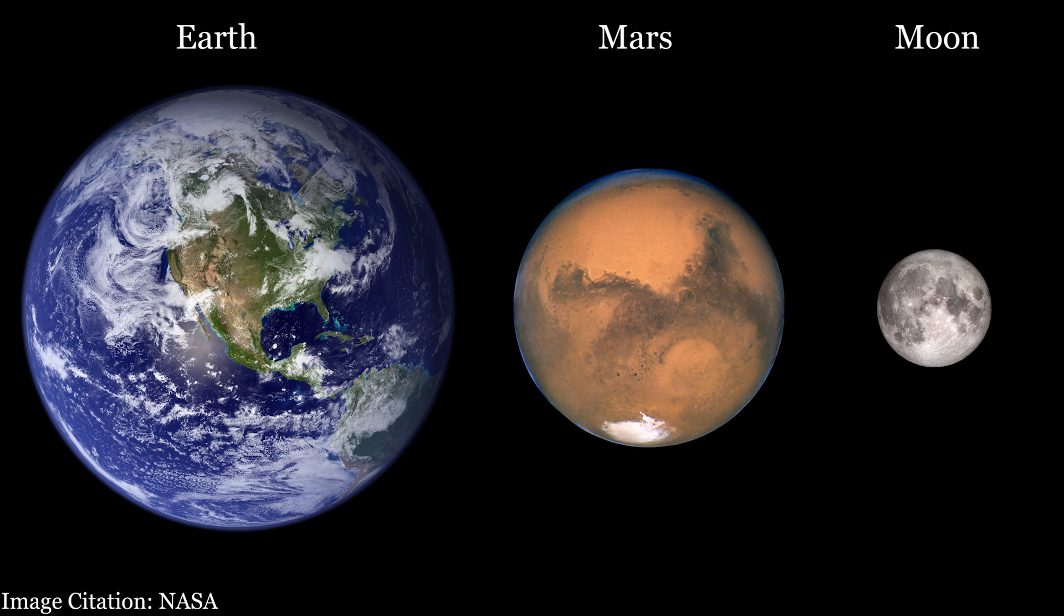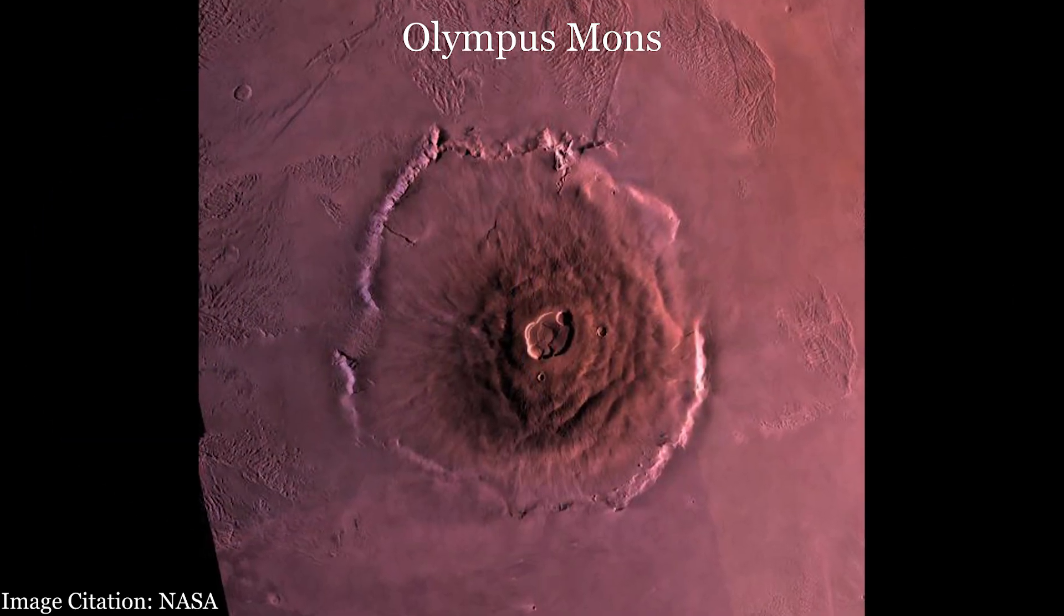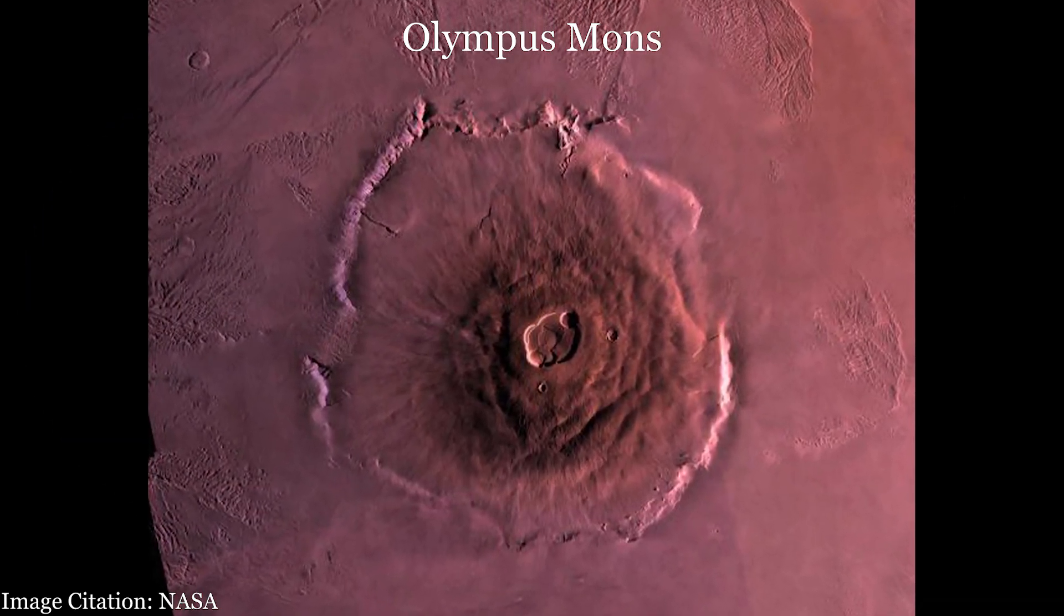The Moon, represented by the smallest sphere, is solid and cold all the way through. We see no evidence today of geologic activity nor a global magnetic field around the Moon. Mars is represented by the 2 inch sphere. Mars shows rather recent evidence of volcanic activity. It isn't clear if it can ever be volcanically active again.